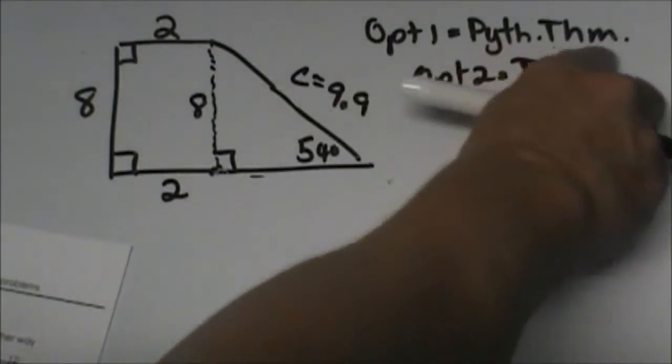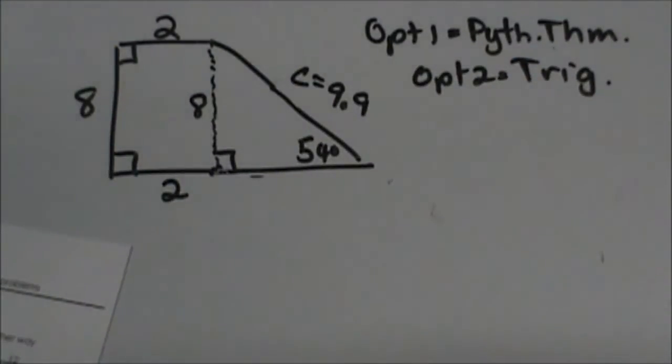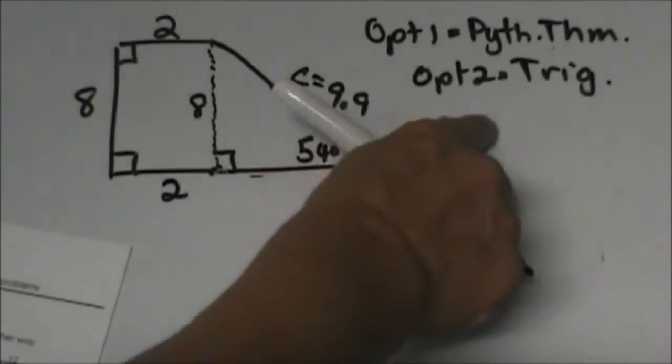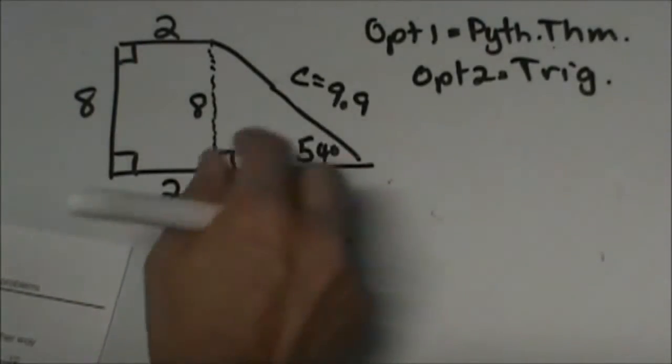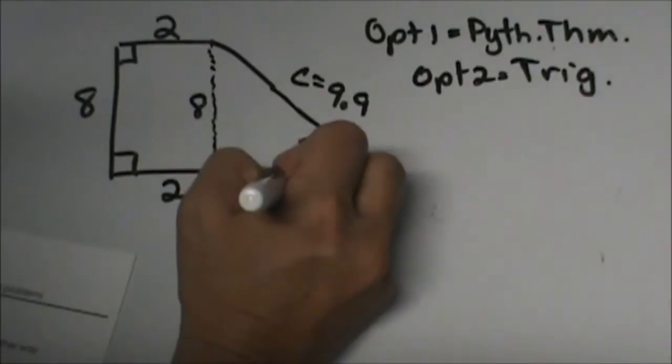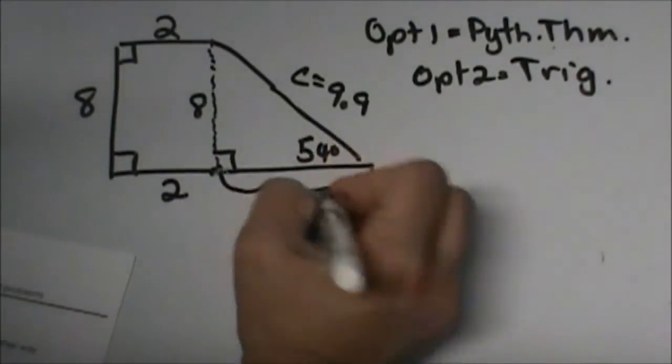I'm actually going to use the Pythagorean Theorem. It's a little bit cleaner for me, but you can use a trig function if you so choose to. So now I'm going to find this portion and I'll call that A.